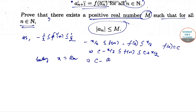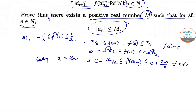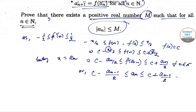Now putting x = aₙ, we can get c - aₙ/2 ≤ f(aₙ) ≤ c + aₙ/2 for all n in ℕ. For the next value, replacing aₙ by a_{n-1}: c - a_{n-1}/2 ≤ aₙ ≤ c + a_{n-1}/2. Let this be equation (1).